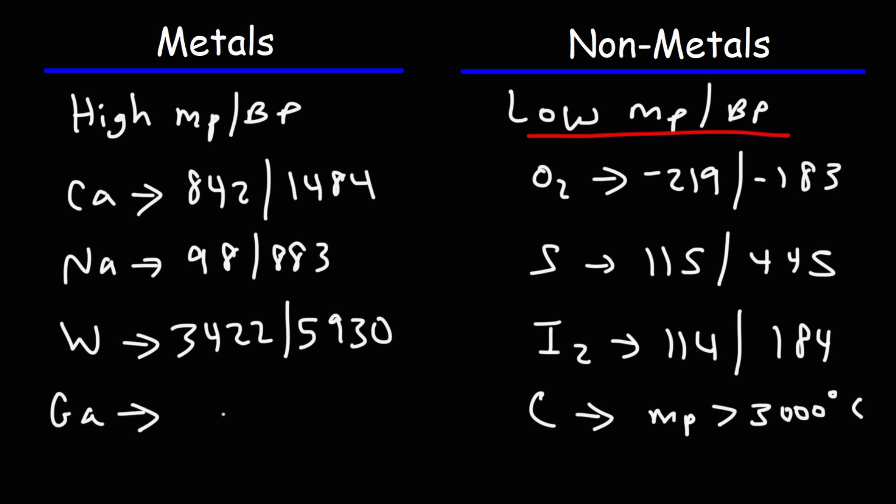Gallium is a metal that can melt in your hand. Its melting point is very low, 30 degrees Celsius. Its boiling point is very high. There are some metals that have low melting points. Mercury, it's a liquid metal, but the majority of metals, they have high melting points and boiling points. And the majority of non-metals, particularly the molecular solids, they have low melting points and boiling points. But the covalent solids, the network covalent solids, they have a very high melting point for non-metals.